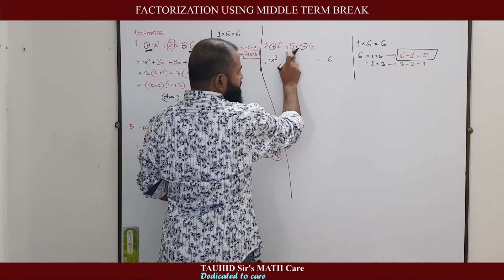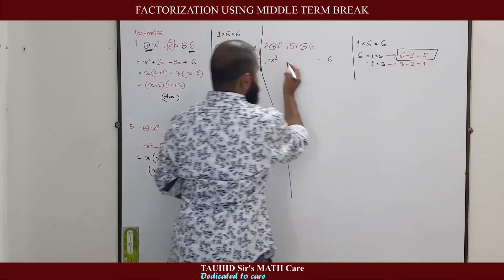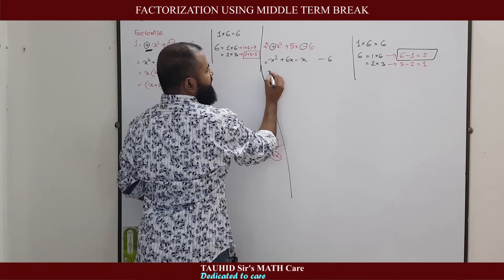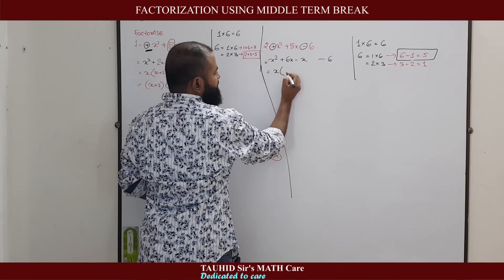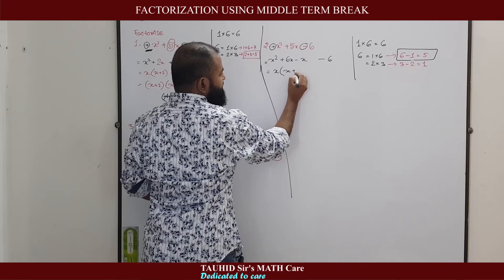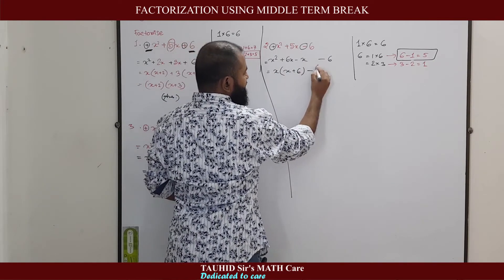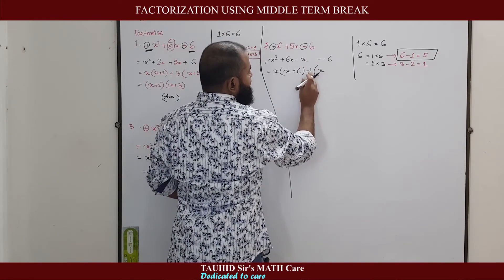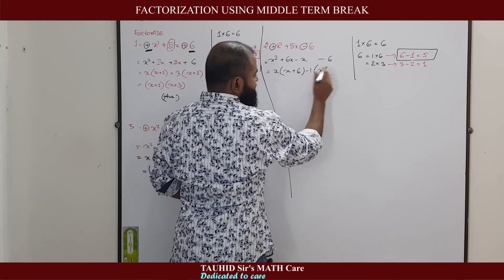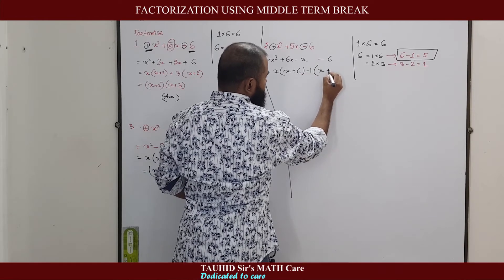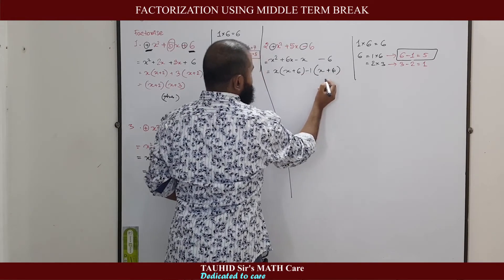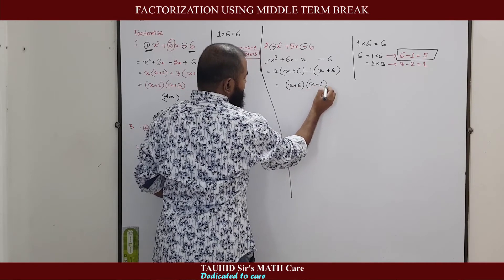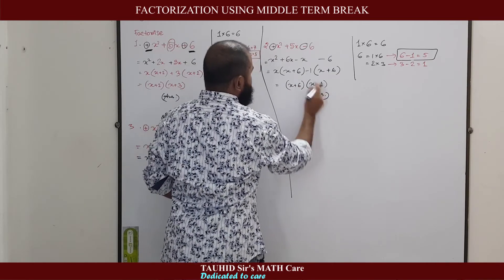The first term and third term remain the same. For the middle term 5x we use 6 and 1, writing it as 6x − x. Taking x common from the first two terms gives x(x + 6). Taking 1 common from the last two terms — where minus times minus becomes plus — gives 1(x + 6). So the answer is (x + 6)(x − 1). This is the answer to question number 2.